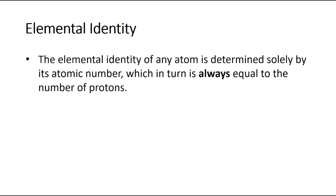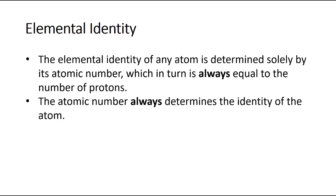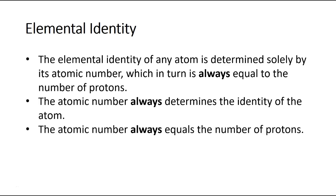What determines the elemental identity of any given atom? The elemental identity is determined solely by one thing: the atomic number. Those are the numbers in the periodic table that the elements are listed in order of — listed in ascending order of atomic number — and that atomic number is always equal to the number of protons. So the number of protons equals the atomic number, and the atomic number determines the elemental identity of an atom.